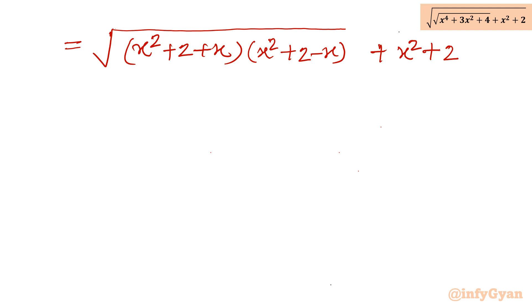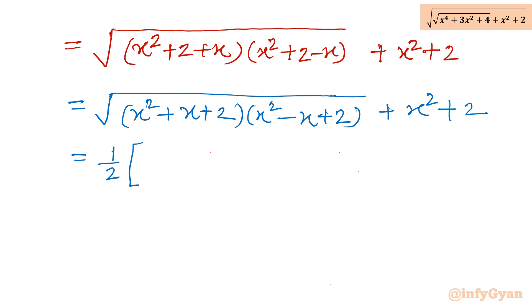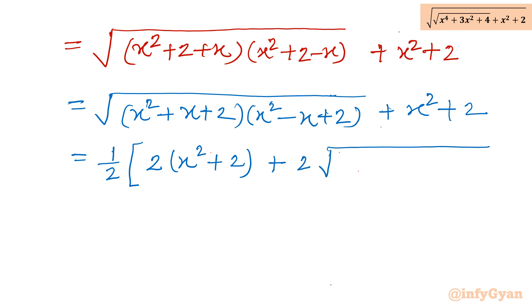Now I will write this in an appropriate way. It is square root of x squared plus x plus 2, times x squared minus x plus 2, and then we are having x squared plus 2.